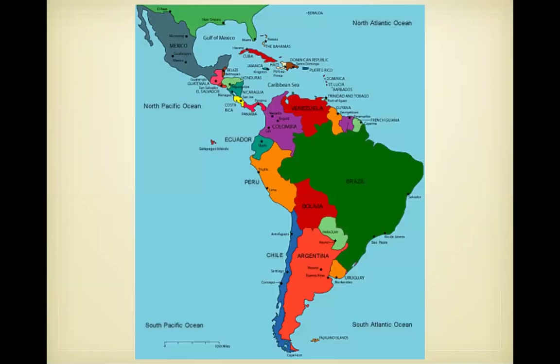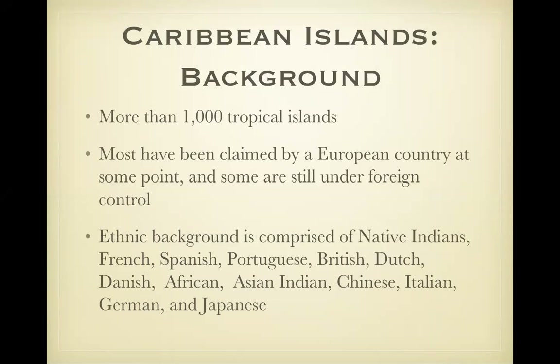This is a map of the Caribbean Islands. You can see the Caribbean Sea and some of the islands: Jamaica, Dominican Republic, Dominica, St. Lucia, and then there is South America. Background: more than 1,000 tropical islands, many have been claimed by a European country. The Virgin Islands, for example, are under U.S. control and Martinique is under control of France. Because of the rich ethnic background of the Caribbean islanders, the population is extremely diverse.